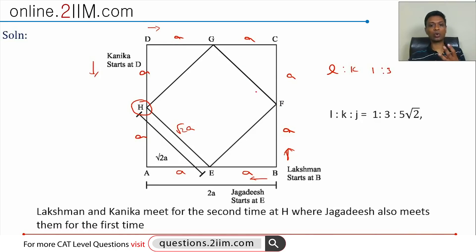From B to D the distance is 4A. They would meet at this point the first time. For the second time, the total distance they have to cover is 8A because they have to cover the entire square. So Kanika would travel 6 and Lakshman would travel 2, or Lakshman would go here and move to G. Kanika would do an entire round and come back to G. So they would meet for the second time at G, which is not what our question is saying.